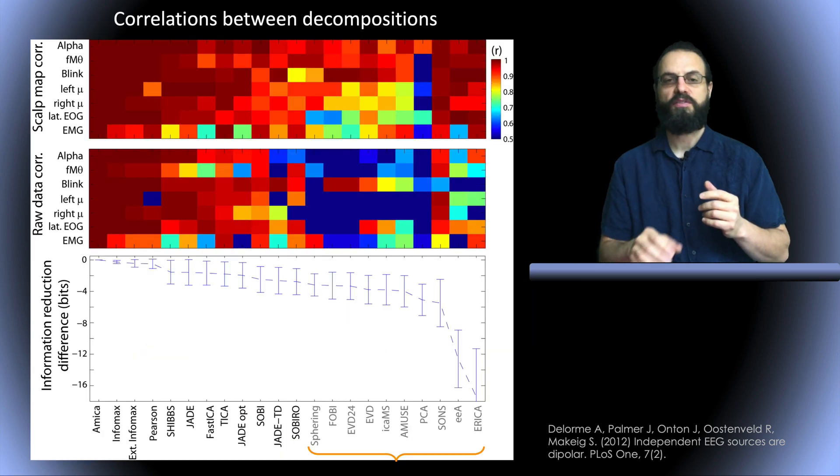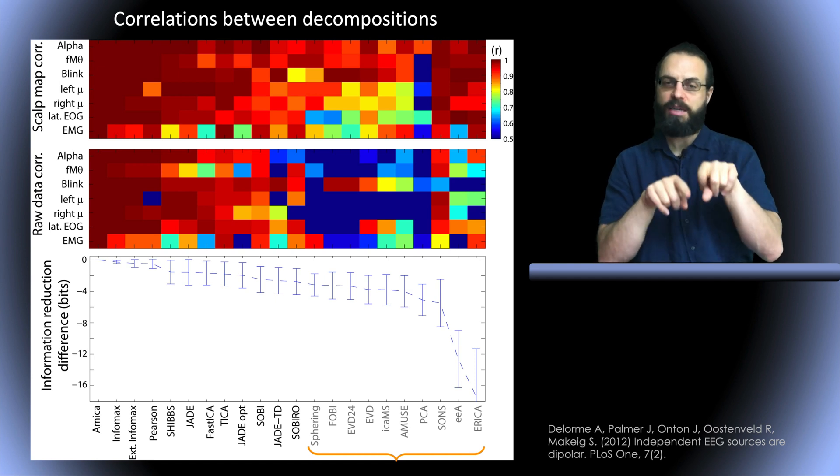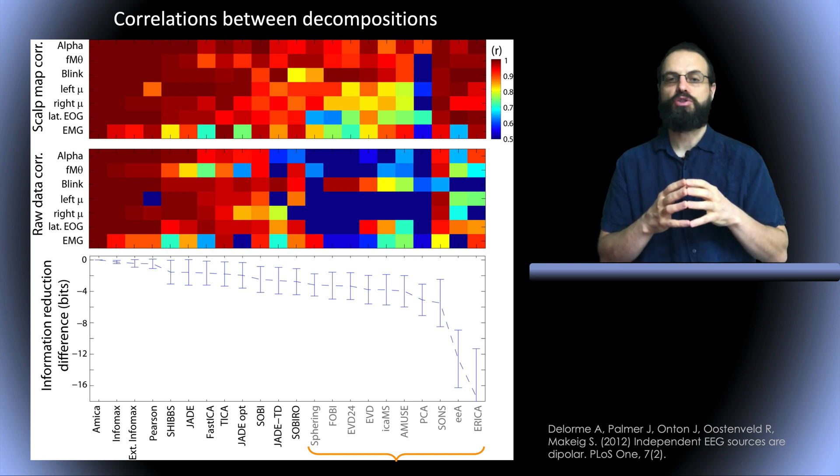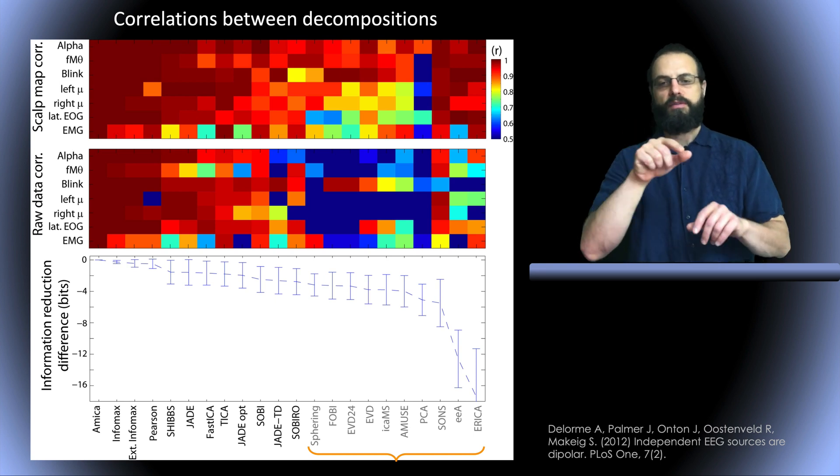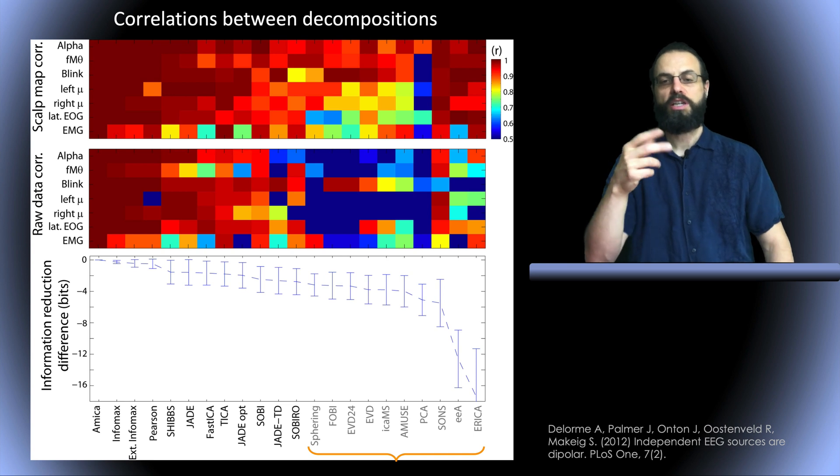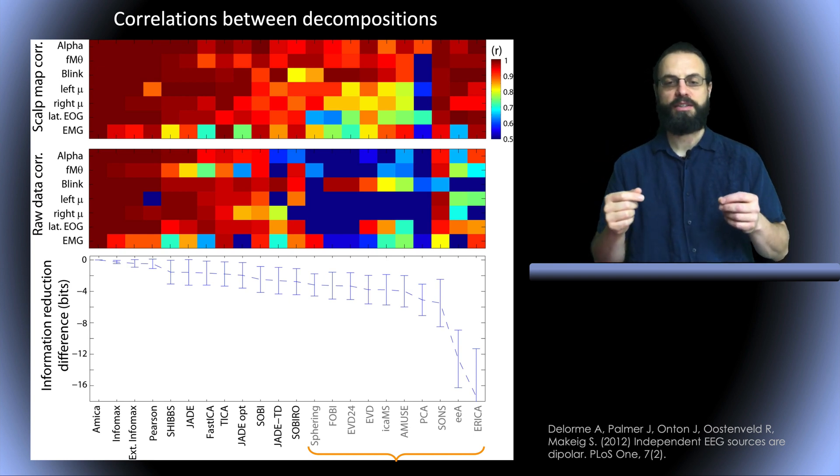I'm going to show you quantified graphics. On top the image represents the scalp topography correlation. I just showed you the scalp topography. The bottom represents the time activity correlation. The time activity also correlated, just like the scalp topography. We used AMICA as the reference. We correlated everything with AMICA because it was performing the best. On the bottom here we see the information reduction difference with AMICA. We ordered the algorithms and we can see that most algorithms are very close to AMICA. On the bottom we can see the algorithms which didn't work well. We have sphering—sphering is basically the decorrelation of the data.